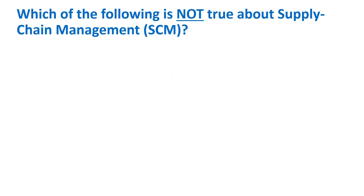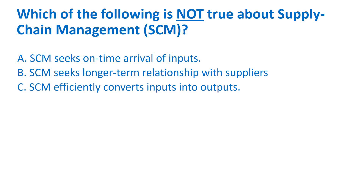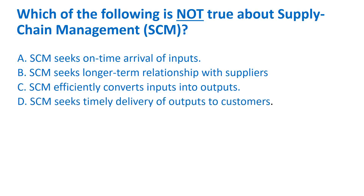Which of the following is not true about supply chain management? A) SCM seeks on-time arrival of inputs. B) SCM seeks longer-term relationships with suppliers. C) SCM efficiently converts inputs into outputs. D) SCM seeks timely delivery of outputs to customers. The correct answer is C — it is operations management that focuses on converting inputs into outputs. Supply chain management focuses on the upstream flow of inputs and downstream flow of outputs; the other three statements are true about supply chain management.